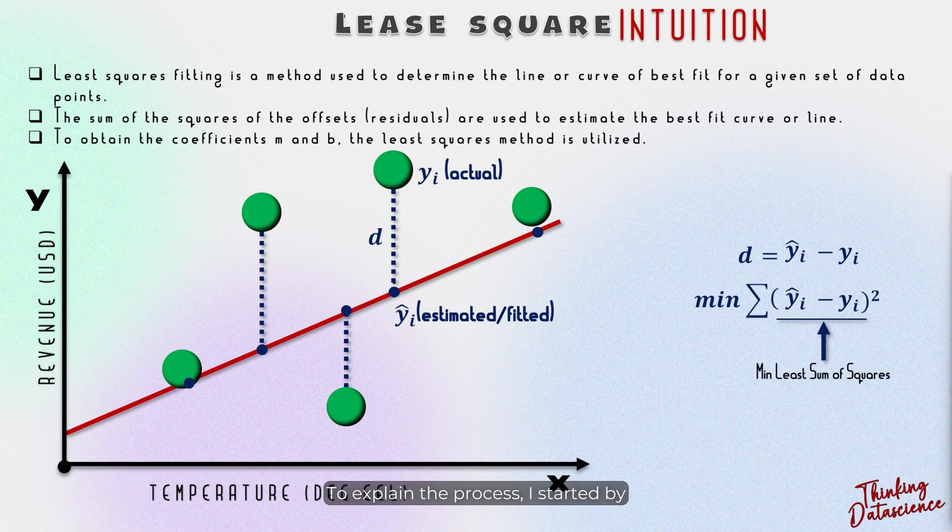To explain the process, I started by selecting a random red line. I then calculated the error by taking the difference between the predicted value of the red line and the actual value and then squaring it. This is known as sum of the squares. The reason for squaring the error is to remove the negative sign and magnify the error. Next I sum up all the squared errors for every point.